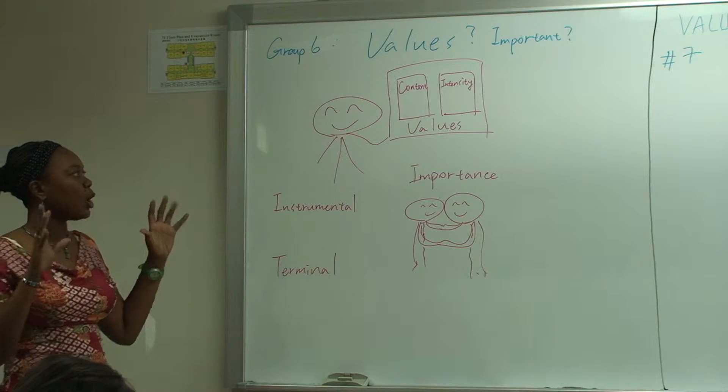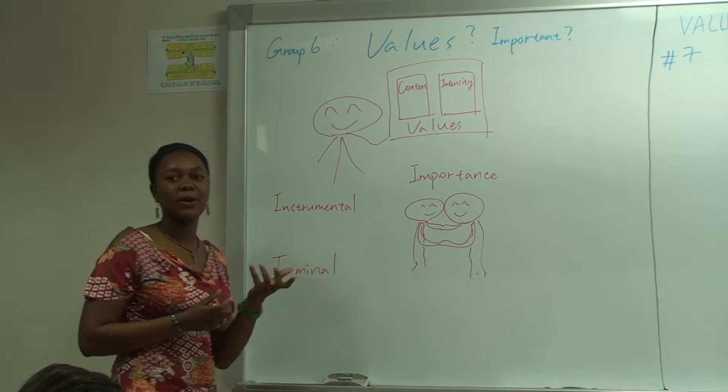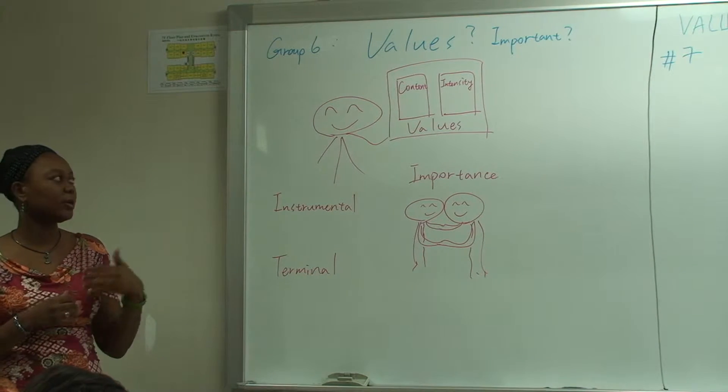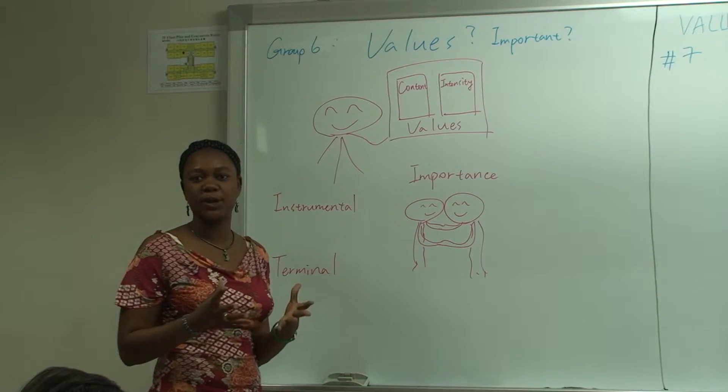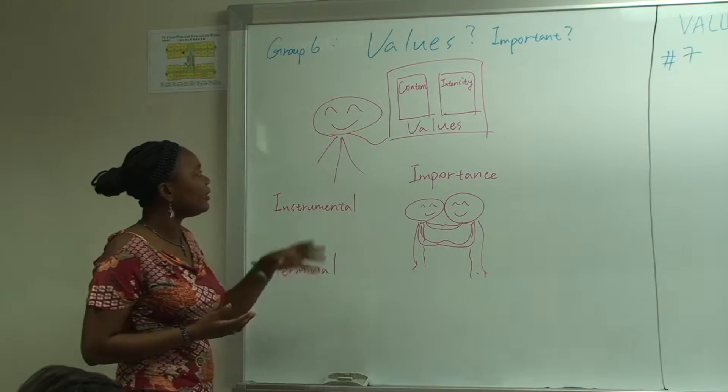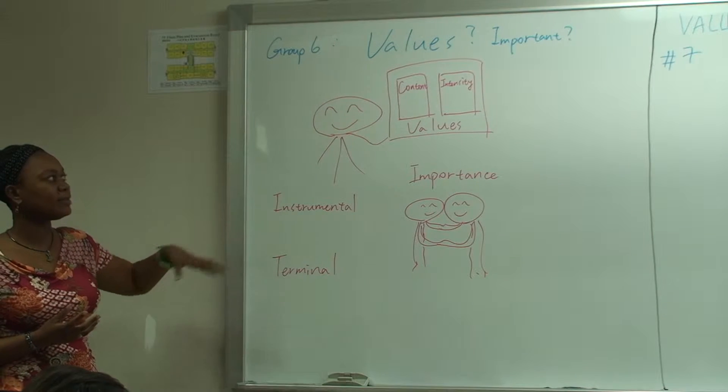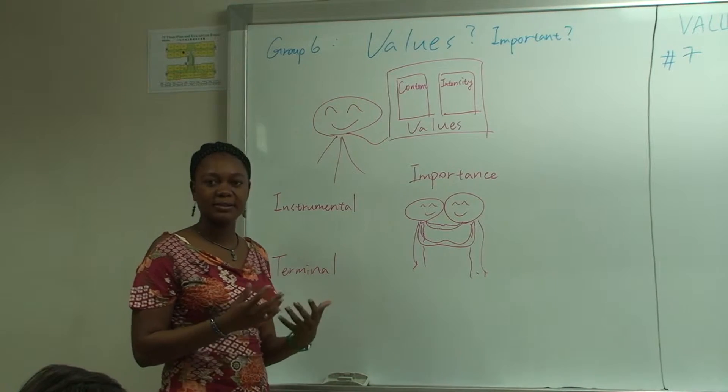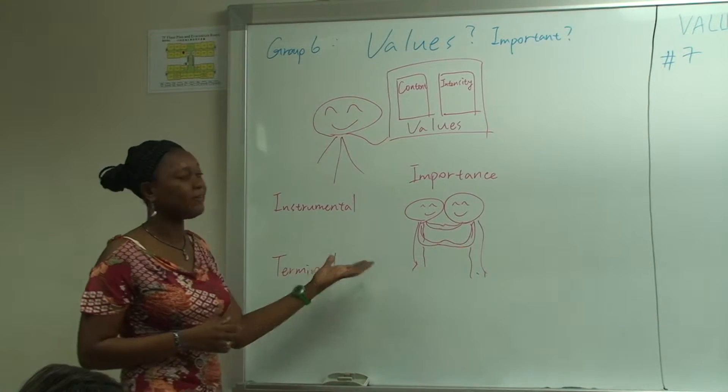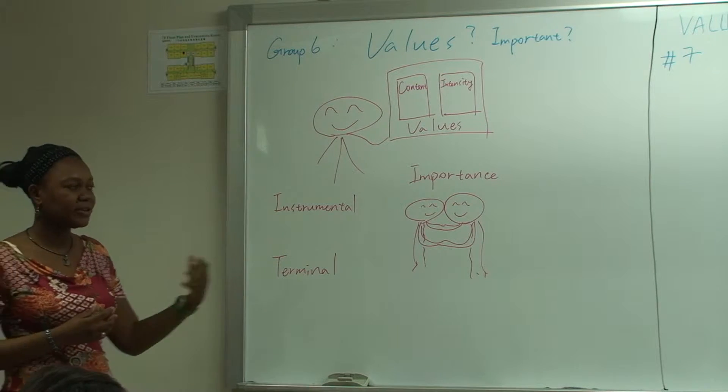And all of the intensity values form what we call the person's value system. The value is very important because value can influence the attitude and behavior of a person. So value can help us understand people.